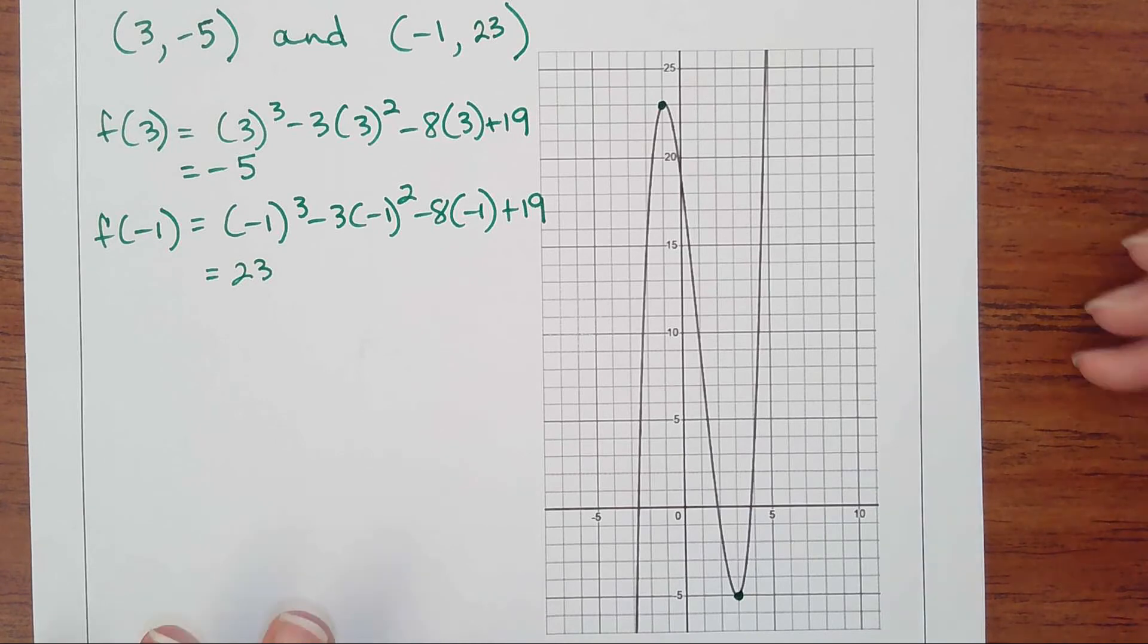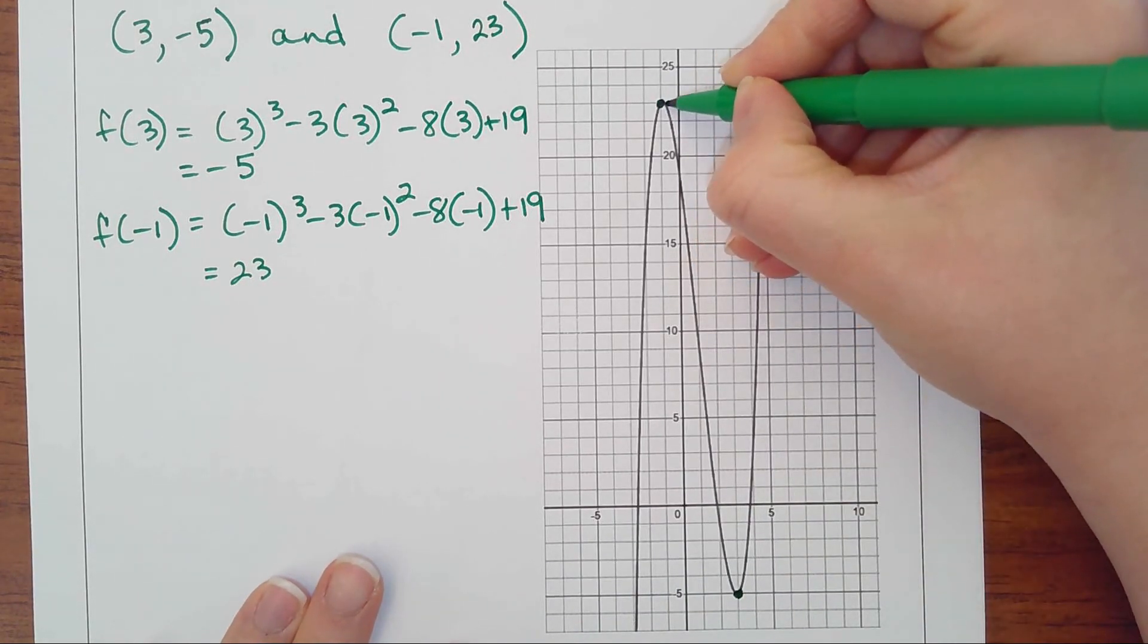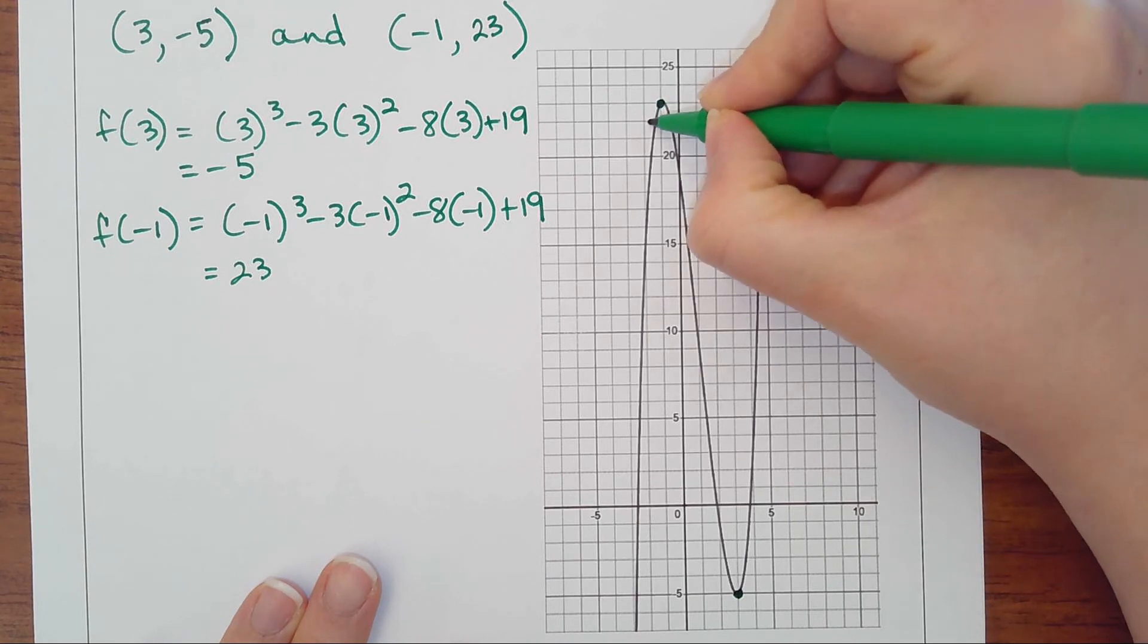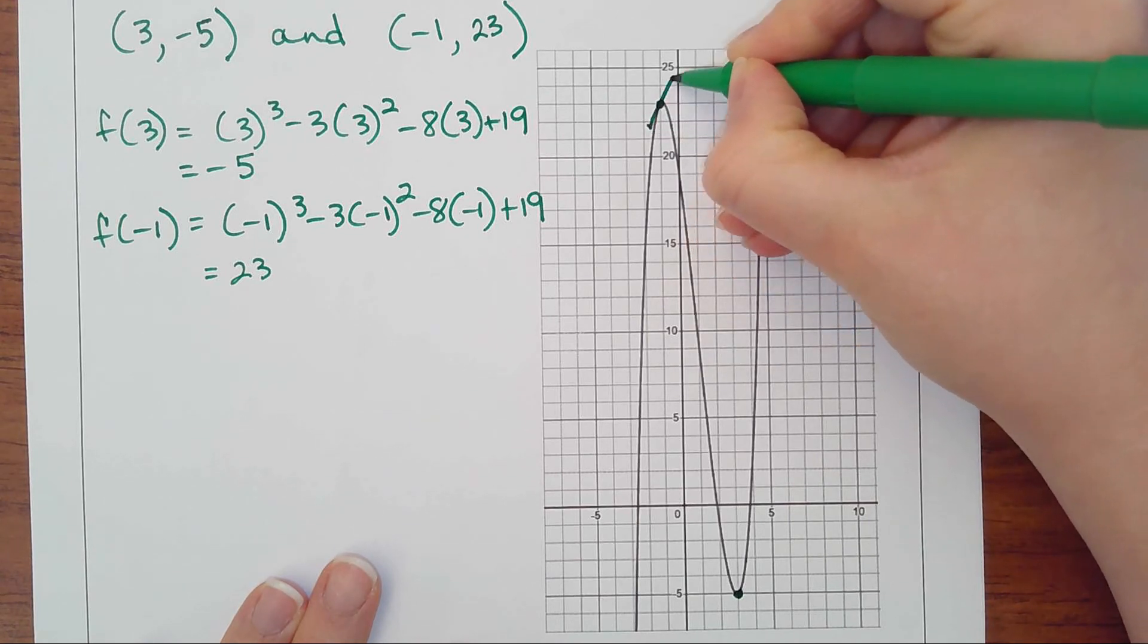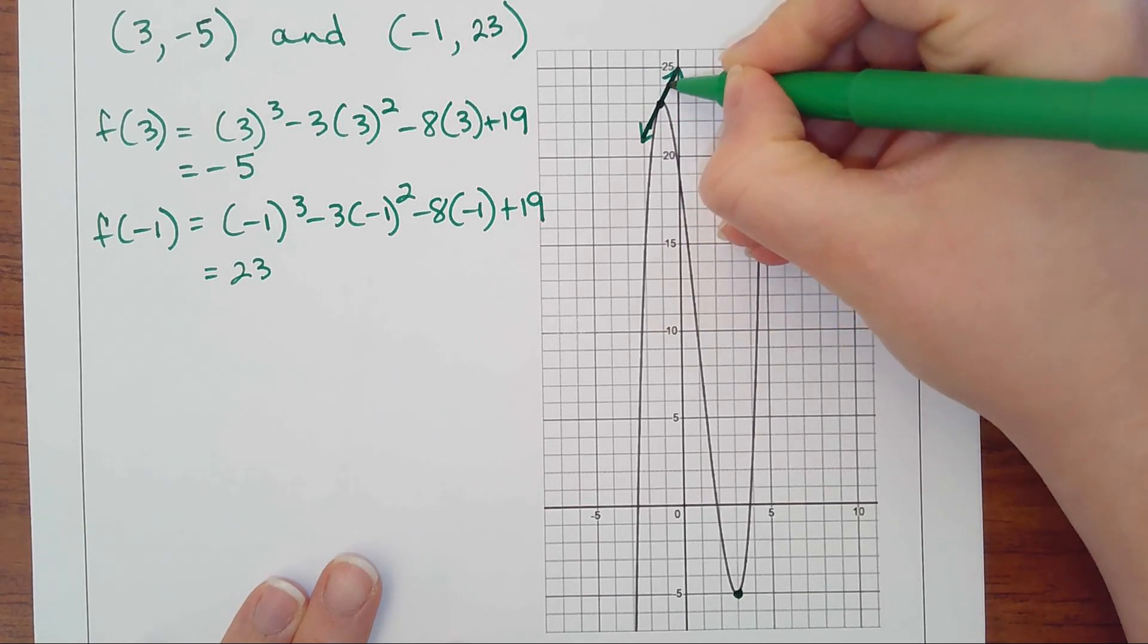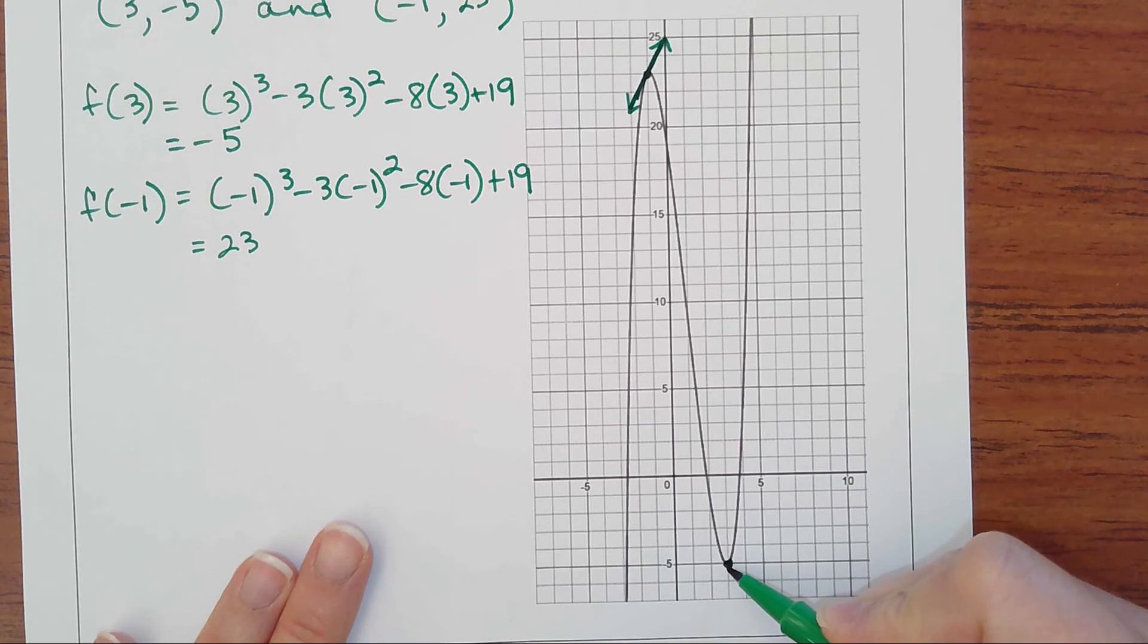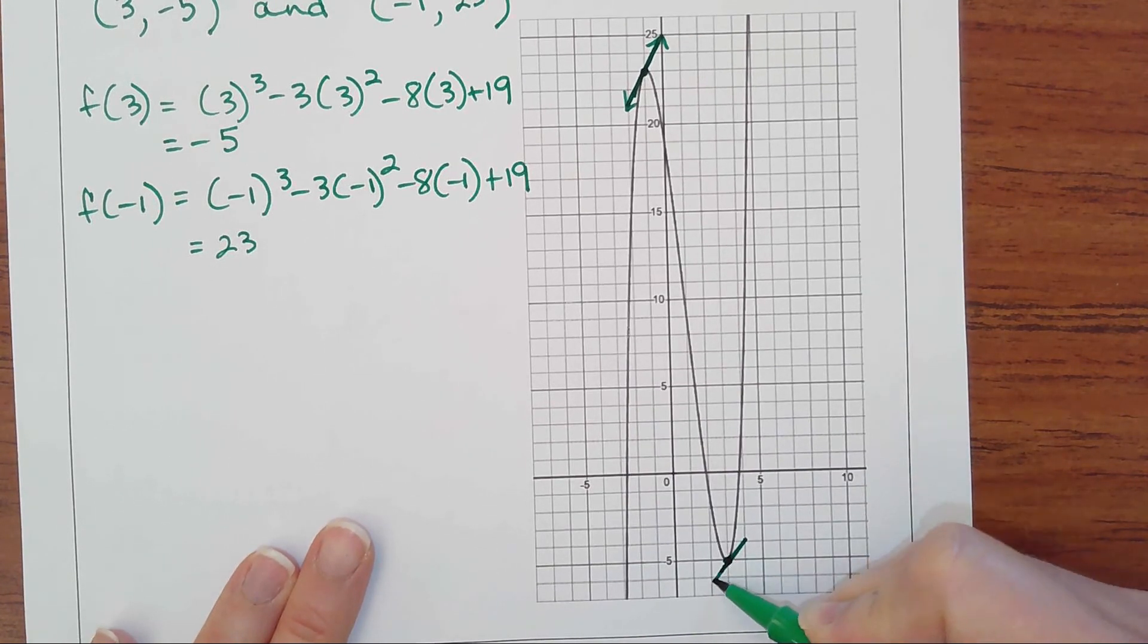Our job was to figure out at what ordered pairs the tangent line has a slope of positive 1. What's cool is you can see this point is not quite at the maximum, so the slope here would be something like this—you can see that does look like a positive 1 slope.